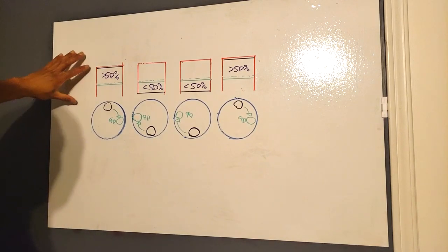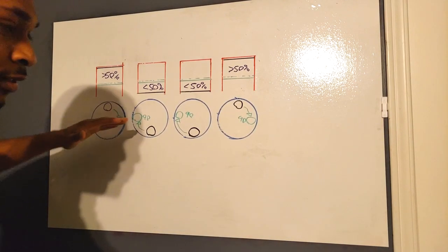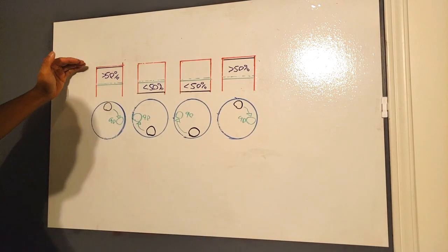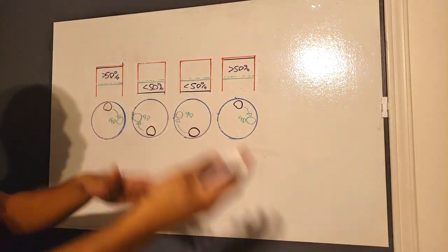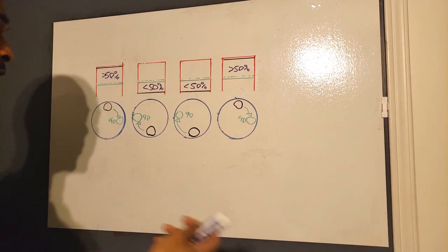So theoretically, if in the same crank rotation in the same amount of time, these two pistons have to travel a further distance, that means they're moving faster. Distance over time, simple, right?